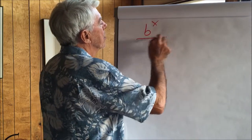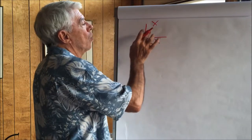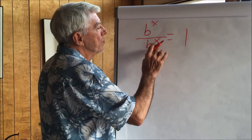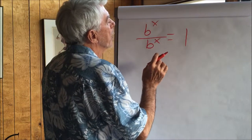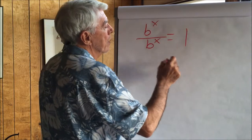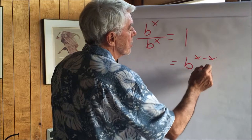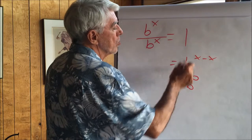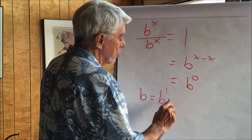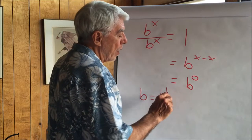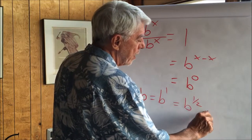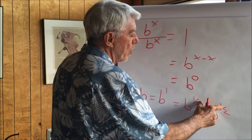Let's write b to the x divided by b to the x. We know from math that when something is divided by itself, the answer is one. We also know from our definition that when we divide numbers with exponents, we subtract the exponents. Subtracting gives us b to the x minus x, which equals b to the zero. These are all equal, so b to the zero equals one. We remember from our definition that b equals b to the first.